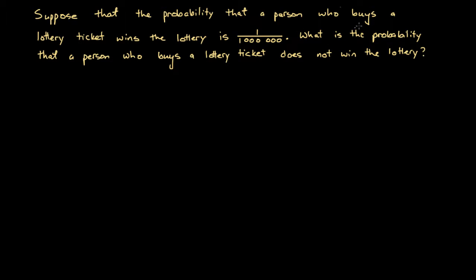Suppose that the probability that a person who buys a lottery ticket wins the lottery is one over a million. What is the probability that a person who buys a lottery ticket does not win the lottery?